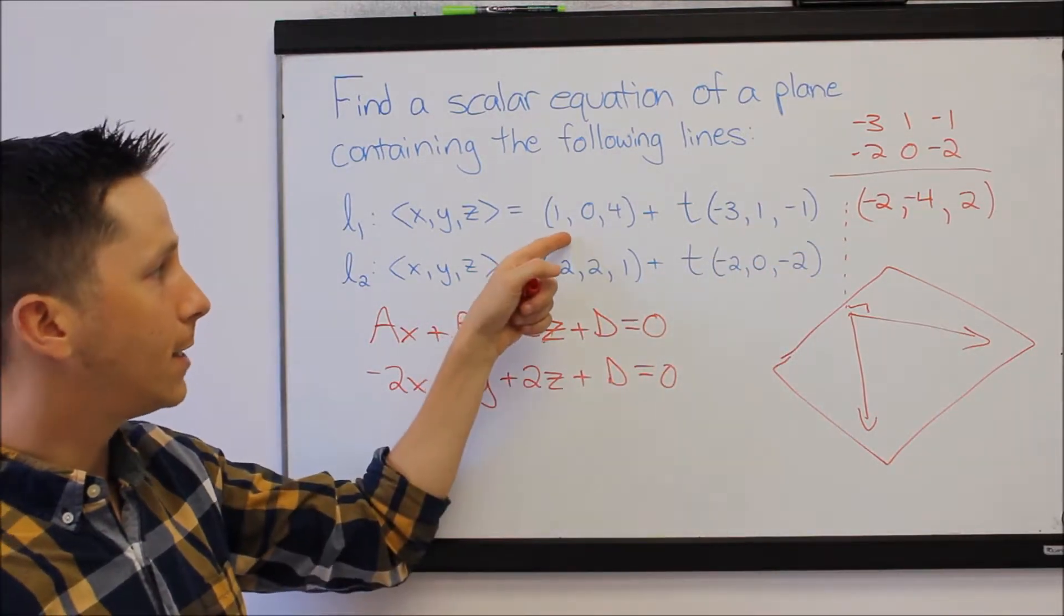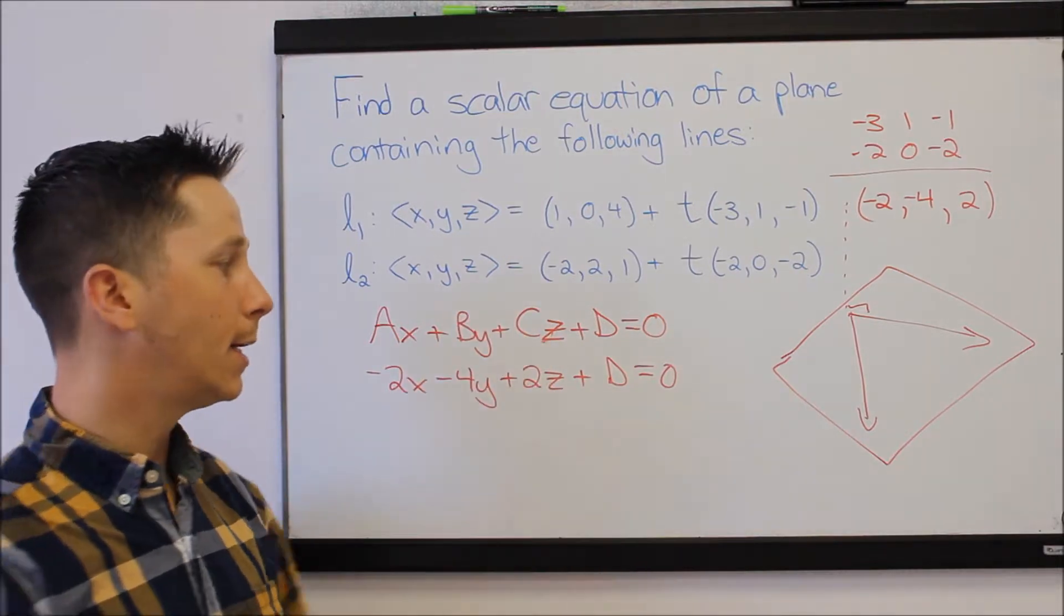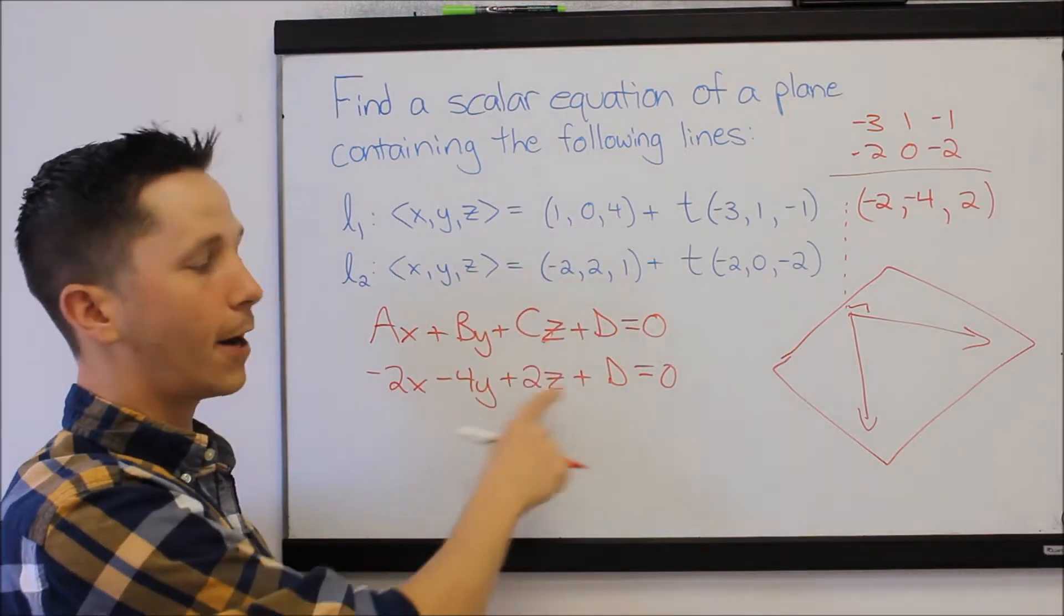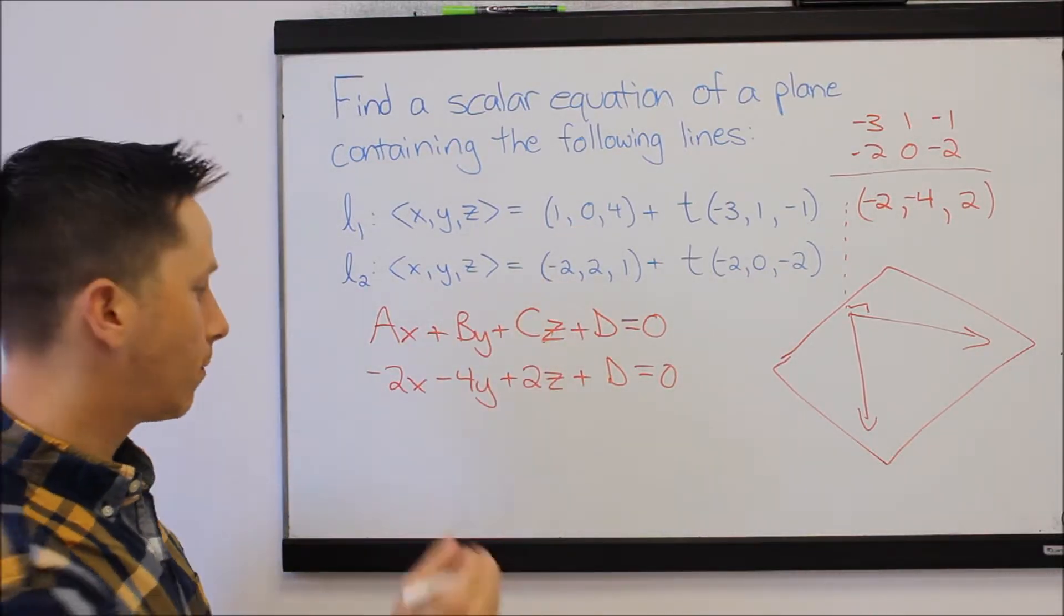Now I know that if these lines lie in my plane, they must lie on this equation. So I'm just going to pick one of the points, plug it in for x, y, and z, and solve for D, and we're done.